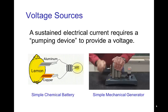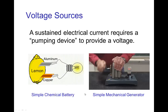With batteries, it's a basic chemical reaction. We can have a very simple type of battery where we use the acid in a lemon to have chemical reactions with a piece of aluminum and a piece of copper. There's a difference between those two, and the resulting voltage forms a simple battery and we produce a current.